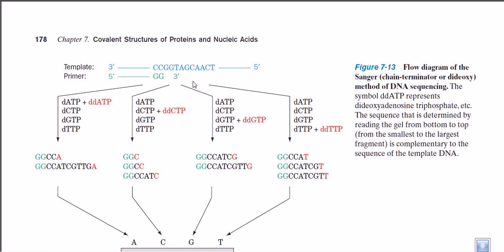The basic concept of this method uses a primer and separate types of nucleotides. Suppose we have a DNA and need to look for its sequence. First, we need to separate both strands from each other. We take the template strand and make a copy — a replica — of this template strand that is exactly complementary to it.